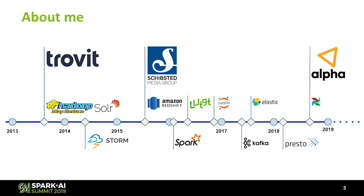Then I moved to Shipstead, a company that owns multiple marketplaces and newspapers around the world. There we were working with Redshift and SQL pipelines, and I was lucky to move to PySpark first, then to Scala Spark. This movement was because people were more familiar with Python, so we decided to go to PySpark. Once they were familiar with Spark, we moved to Scala Spark for better performance. We also had Luigi for orchestration, Jupyter for research and ad hoc analysis, Kafka for ingesting, Elasticsearch, and we implemented a Presto service so people could access all the data with SQL.